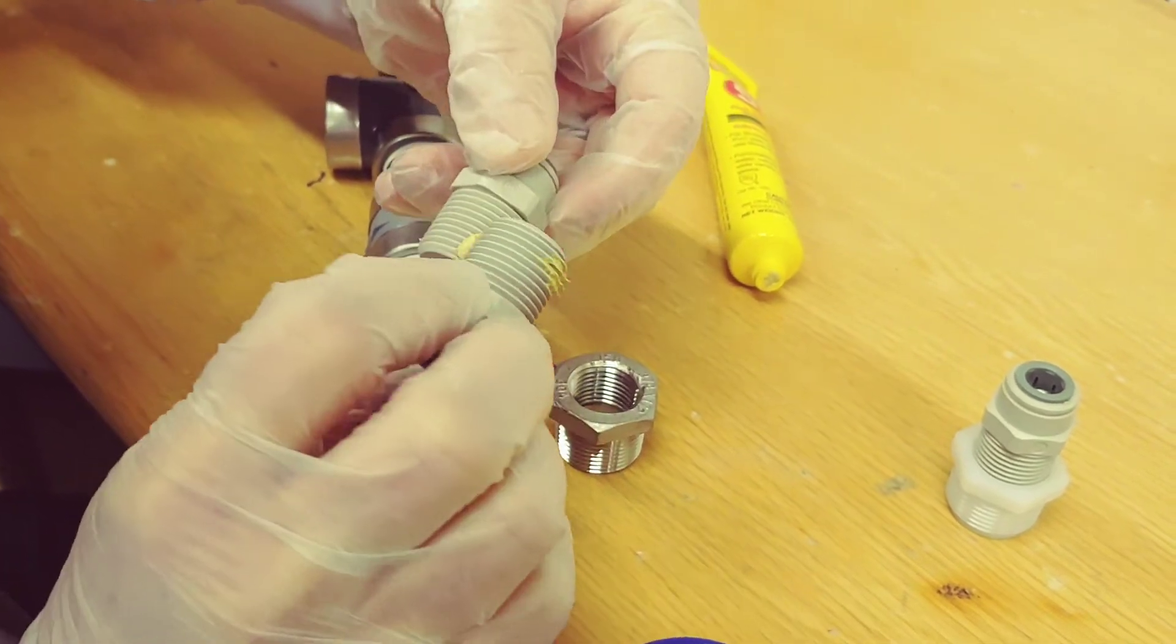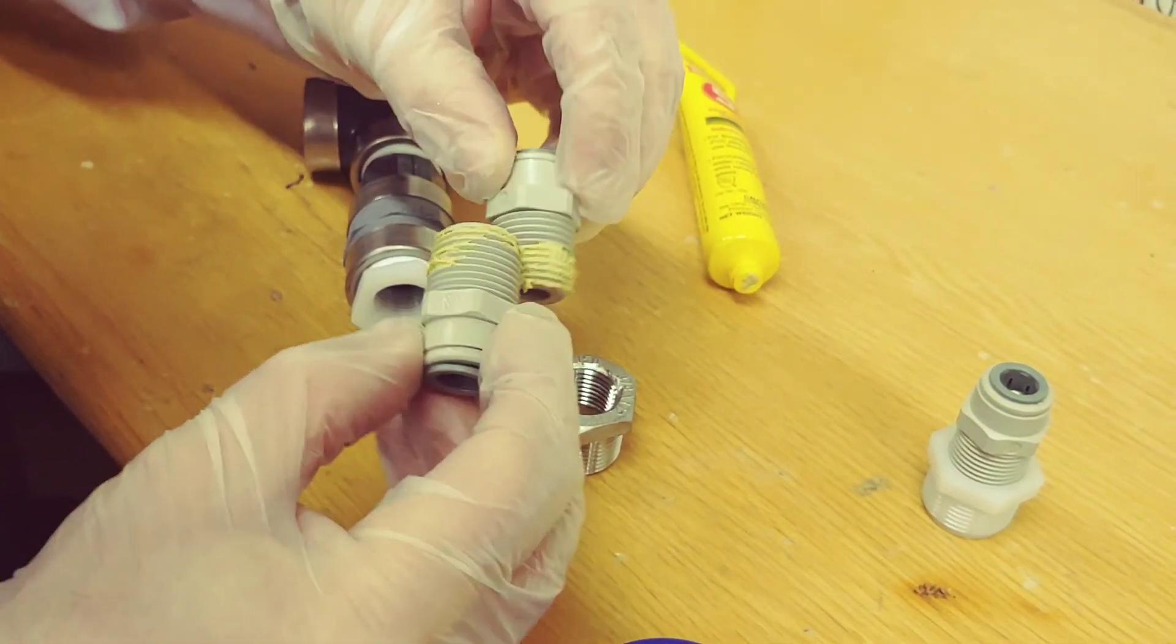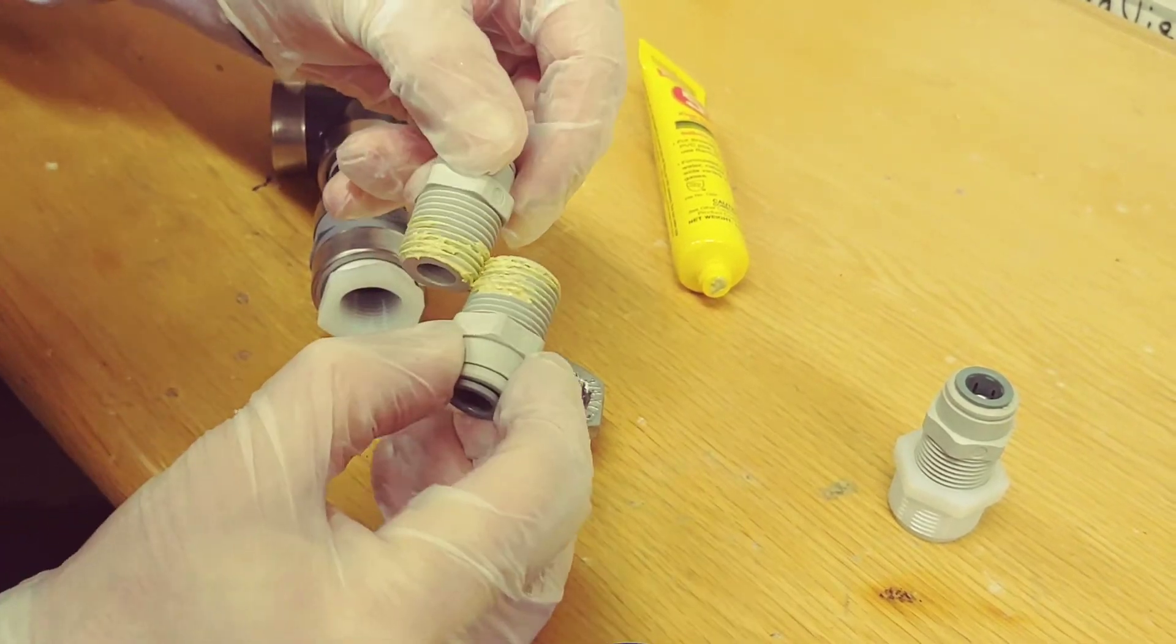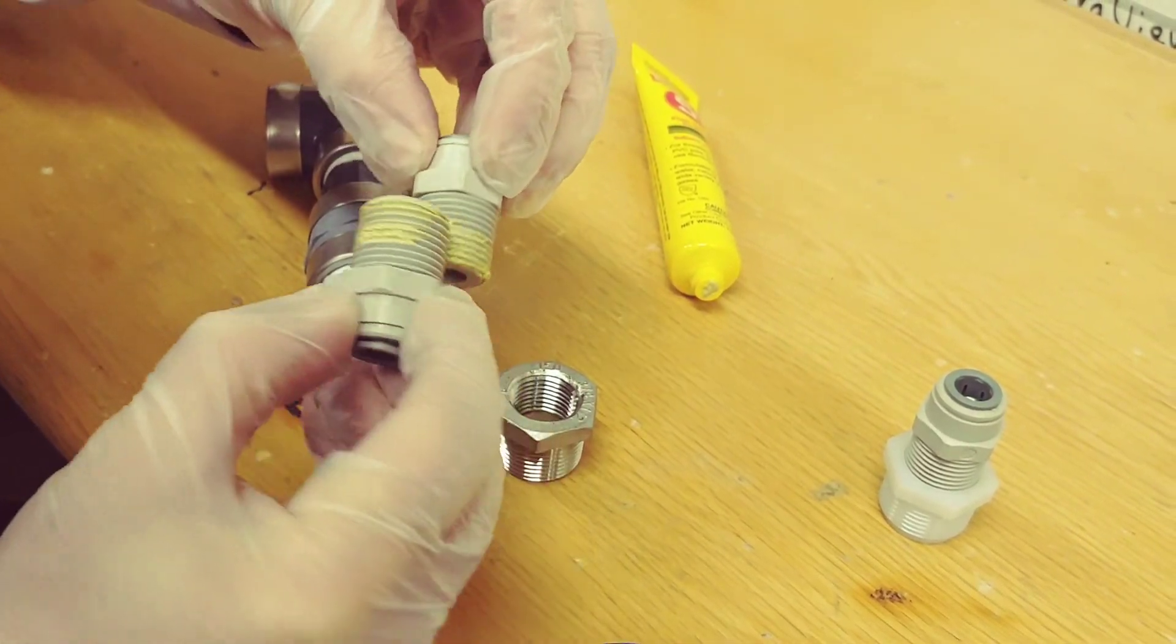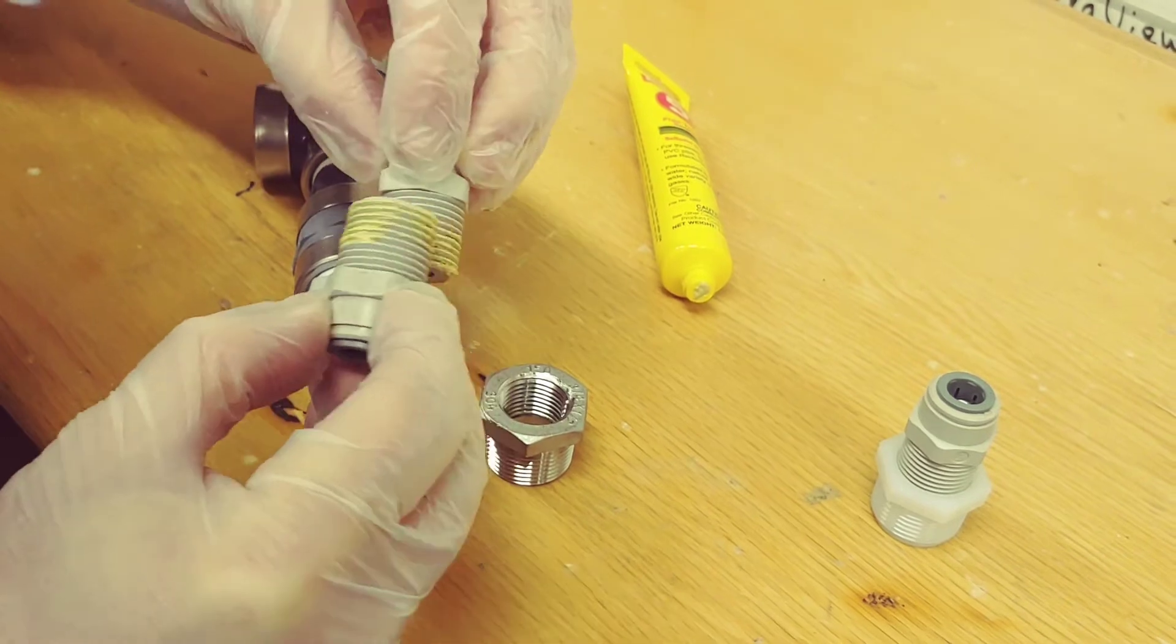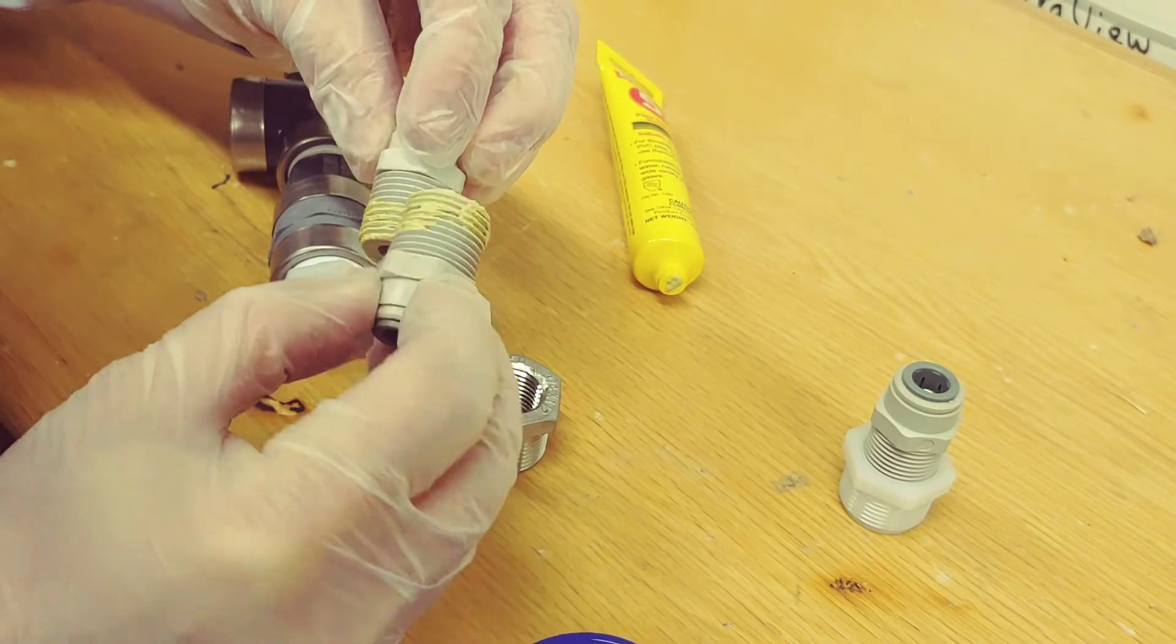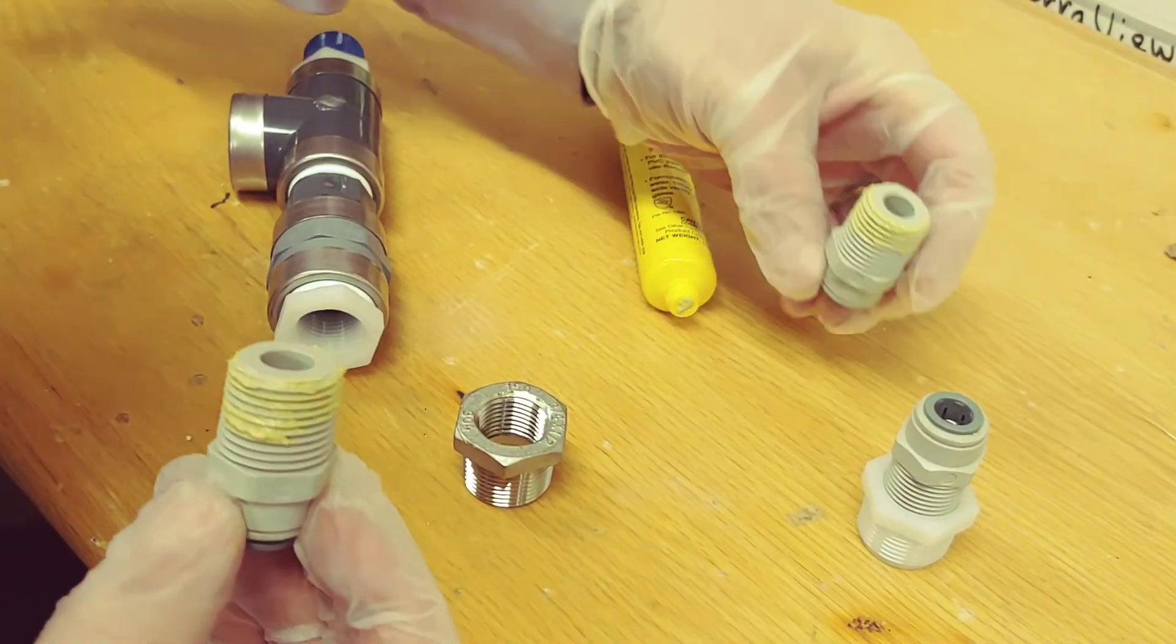And if you do two fittings at a time, you can save a little bit of time because you're getting them about dirty. You don't need to get the entire threads pasted. Just do the action part, and that's the last quarter inch.